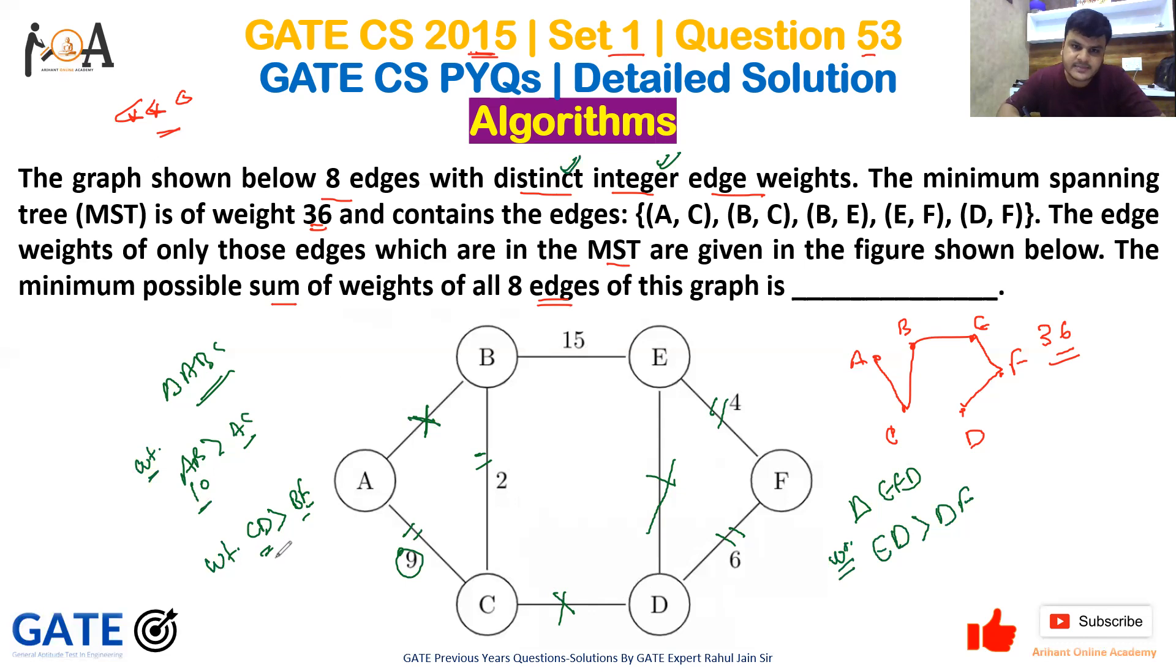Similarly, C-D should be 16. E-D would be 6 or 7. Since all edges are distinct and E-D must be greater than D-F (which is 6), the minimum possible value for E-D is 7. So E-D is 7, plus C-D is 16, plus A-B is 10.